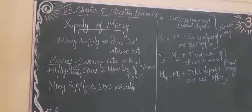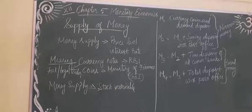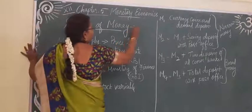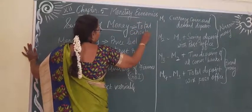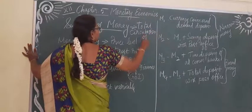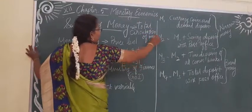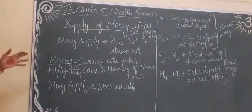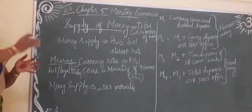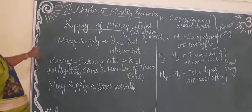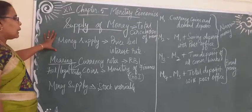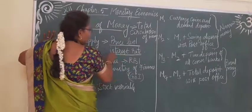What do you mean by money supply or supply of money? Money supply means the total amount of money in circulation in the economy. How much amount of money is in circulation — that is called supply of money or money supply. This money supply plays a vital role in the price level and also in the interest rate.